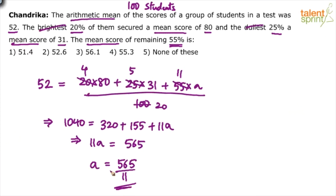So options are simplified now. What is 565 by 11? Do that calculation. See 550 is 50 times. 51 times, 51 point something right, 51 point something.